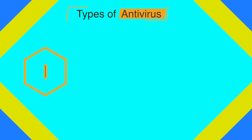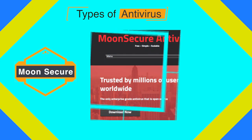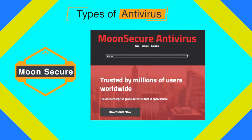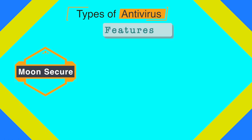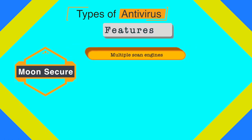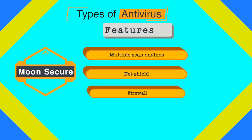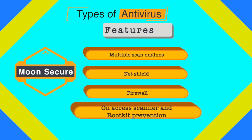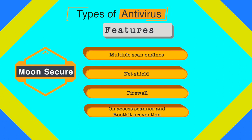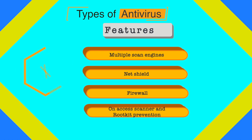The next antivirus is Moon Secure Antivirus, which aims to be the best free antivirus licensed under the GPL license. It offers multiple scan engines, a net shield, a configurable firewall, on-access and on-execute scanning, and rootkit prevention. Several features typically found only in commercial versions are also available in this free antivirus.